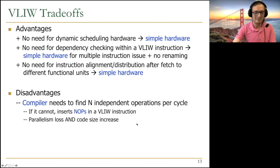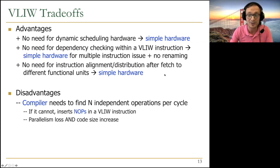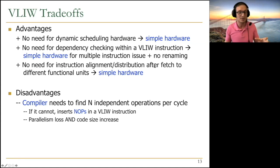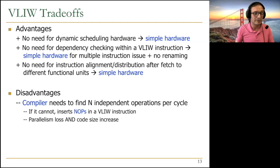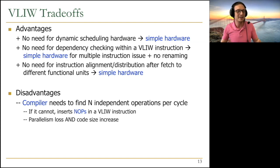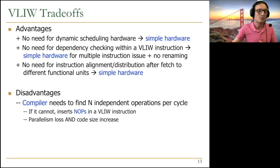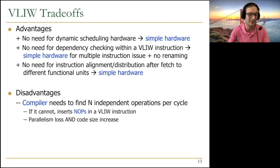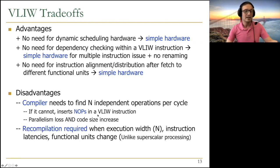Inserting NOPs causes parallelism loss — if your machine is 28-wide but you can only find 2 independent instructions, you lose 26 slots of parallelism. Code size also increases because NOPs must be encoded, though VLIW researchers devised clever encodings to indicate multiple NOPs without using 32 bits per NOP — for example, encoding 'five NOPs follow this instruction' compactly. Parallelism loss remains the bigger concern.